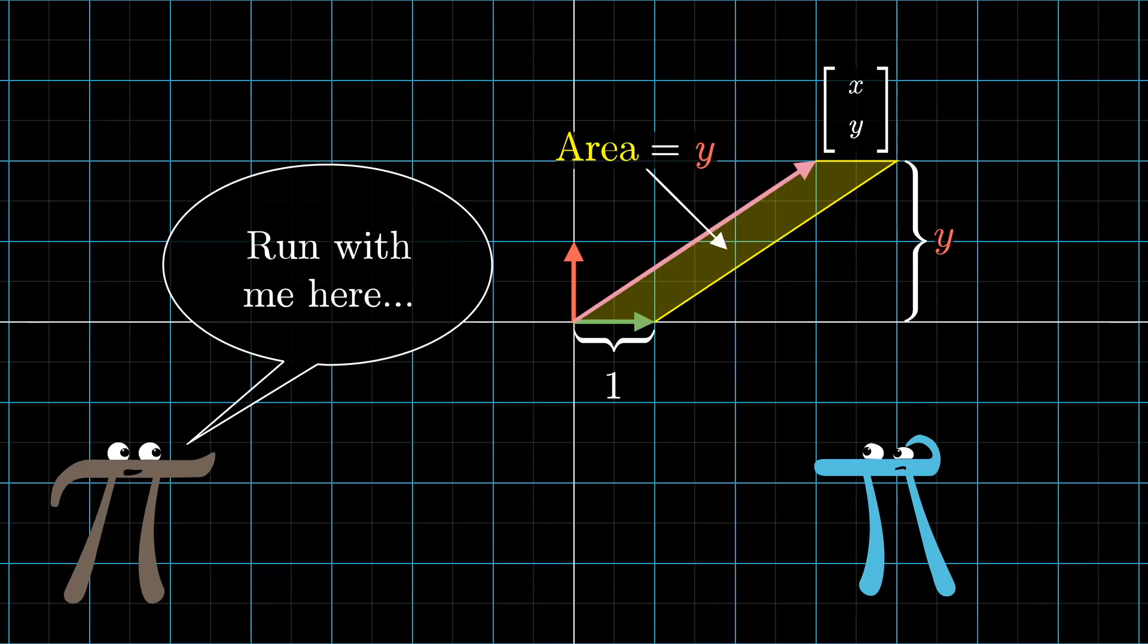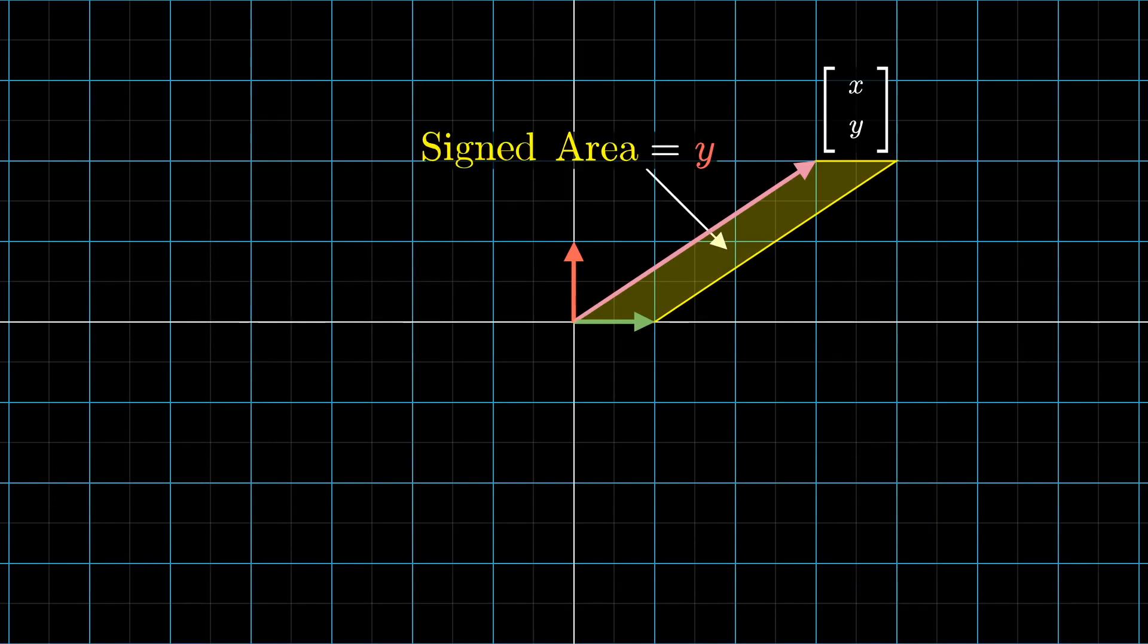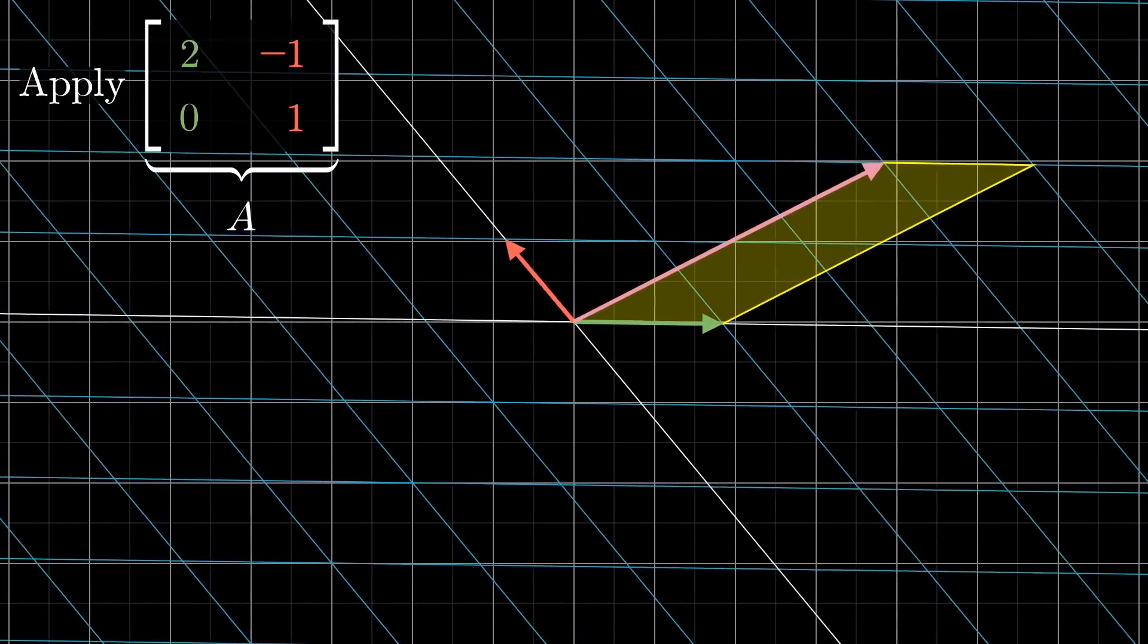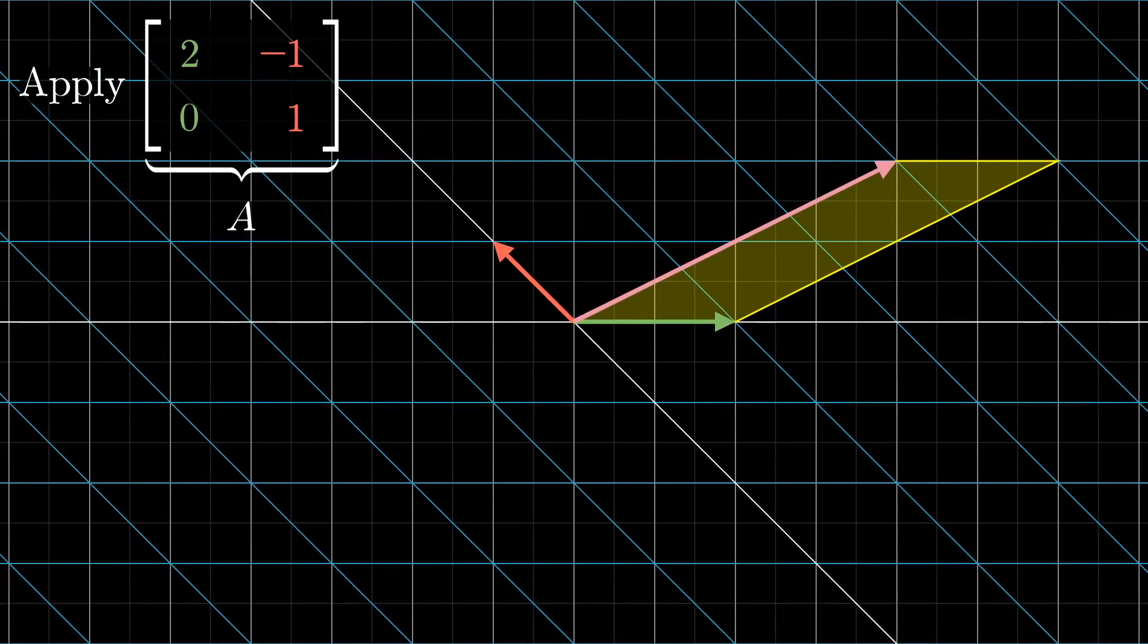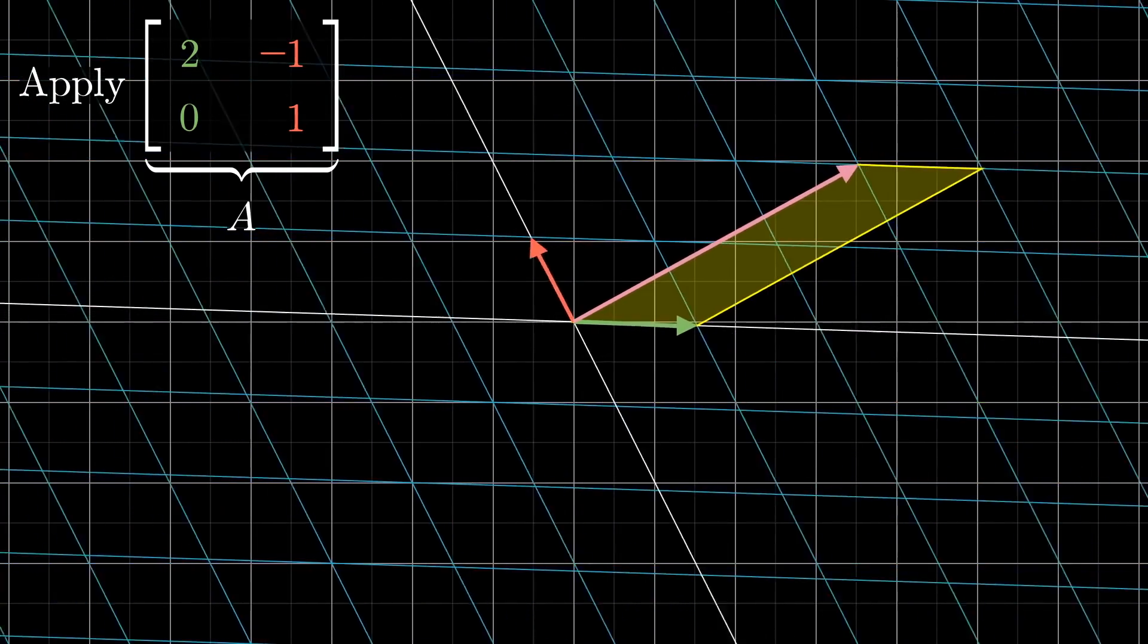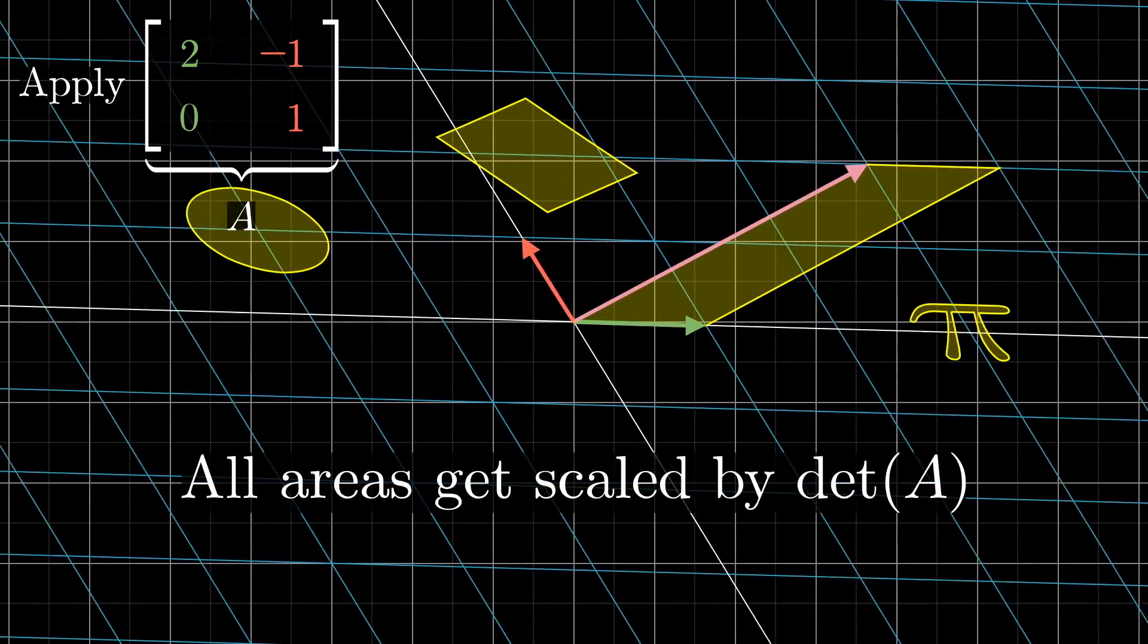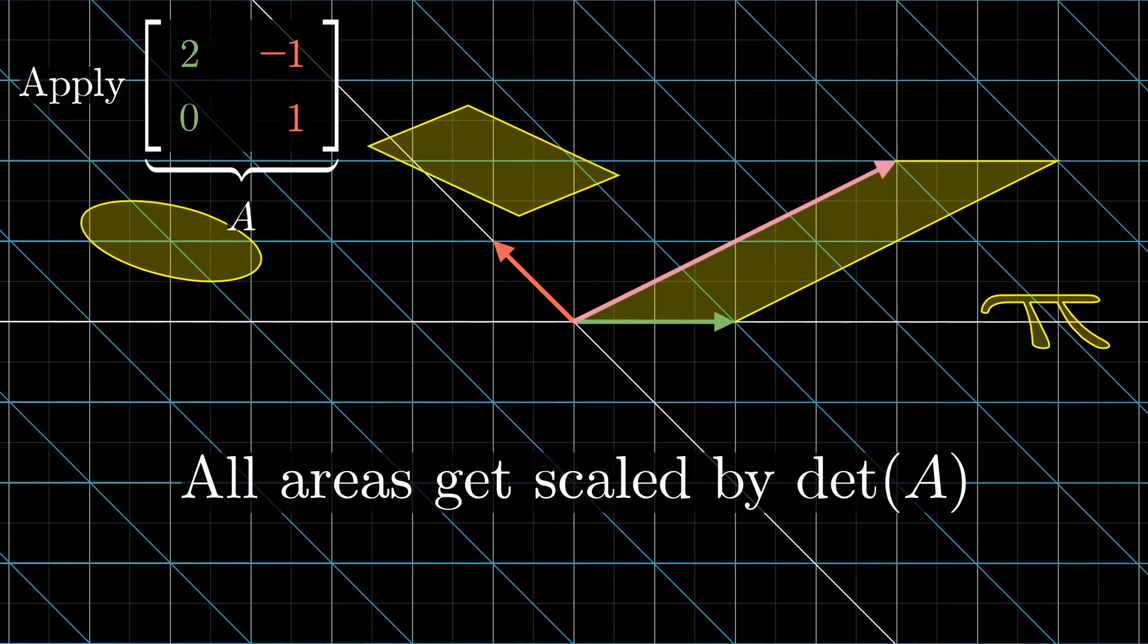Okay, so why think of coordinates as areas and volumes like this? Well, as you apply some sort of matrix transformation, the areas of these parallelograms, well, they don't stay the same, they might get scaled up or down. But, and this is the key idea of determinants, all of the areas get scaled by the same amount, namely the determinant of our transformation matrix.